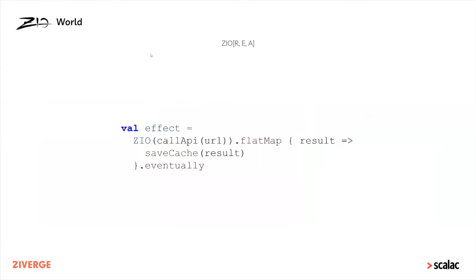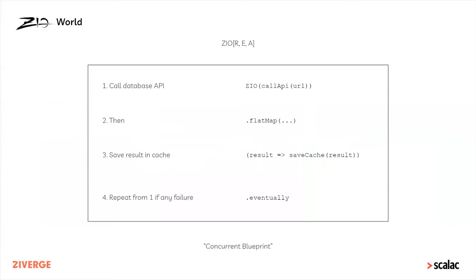Whenever you write ZIO code — creating an effect constructed from ZIO's constructor plus flatMap and a combinator called eventually — what happens behind the scenes is all these methods call other methods that end up building a sort of blueprint. It's a concurrent blueprint that describes the execution of this ZIO effect. In this concurrent blueprint we have a series of instructions expressed sequentially: we call the database API, do something else (the flatMap), save results in the cache, and finally repeat if any of these steps fail.